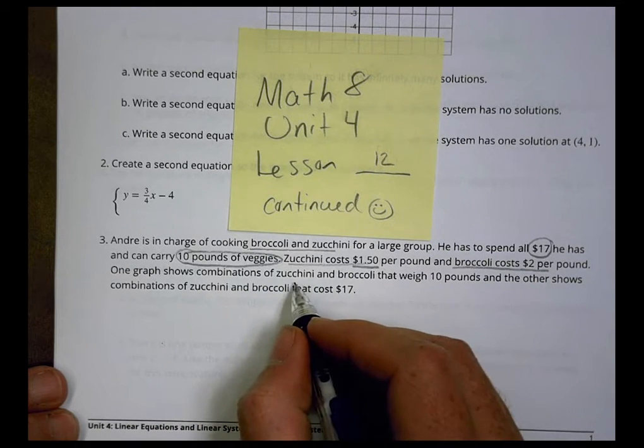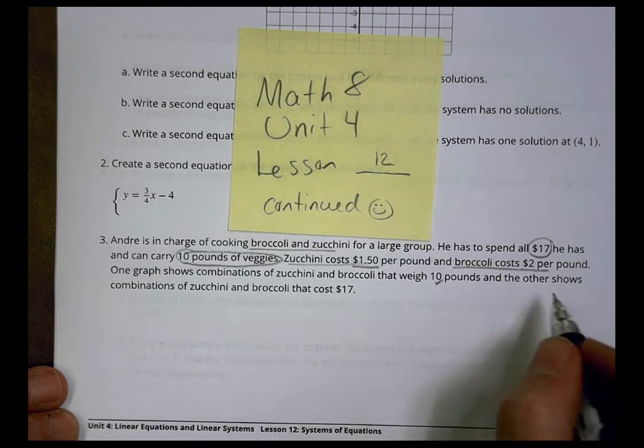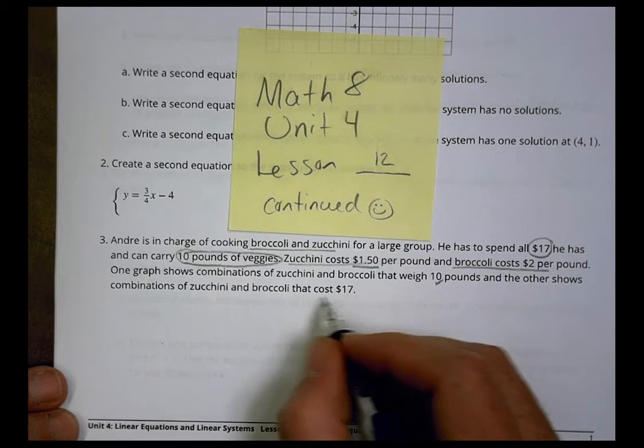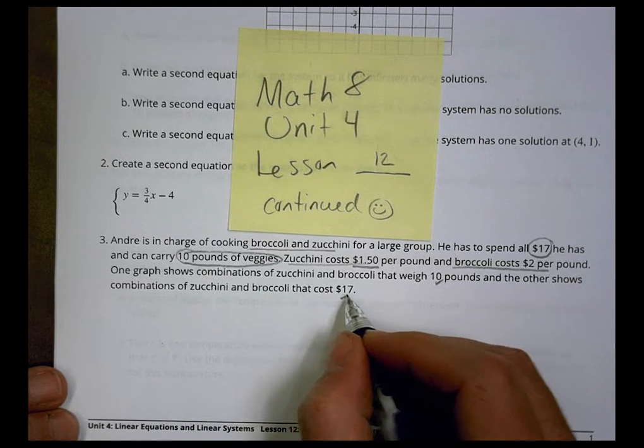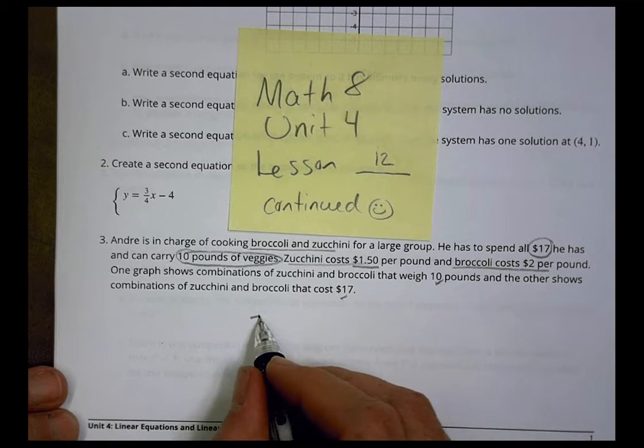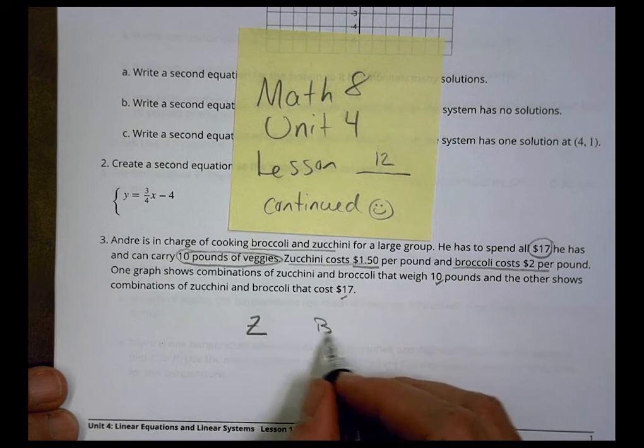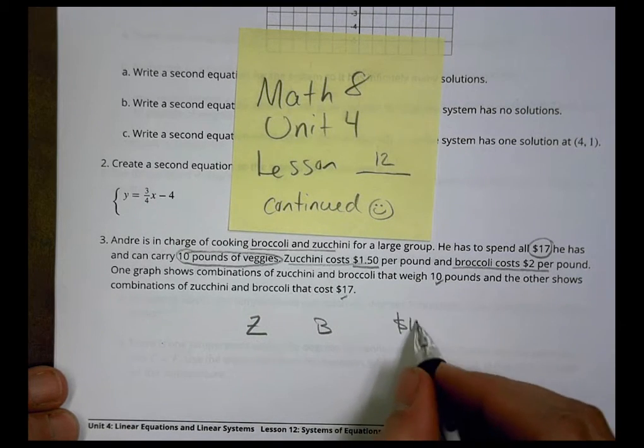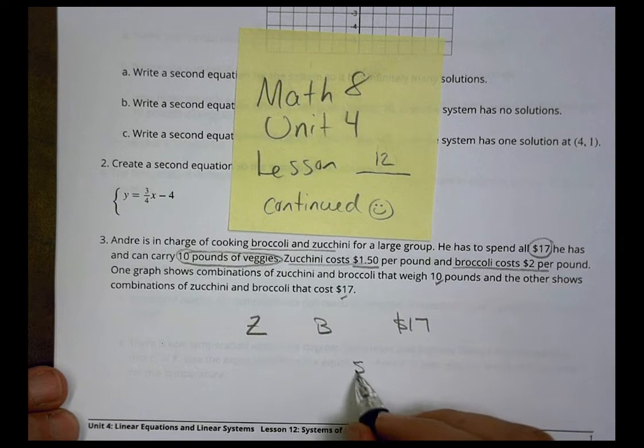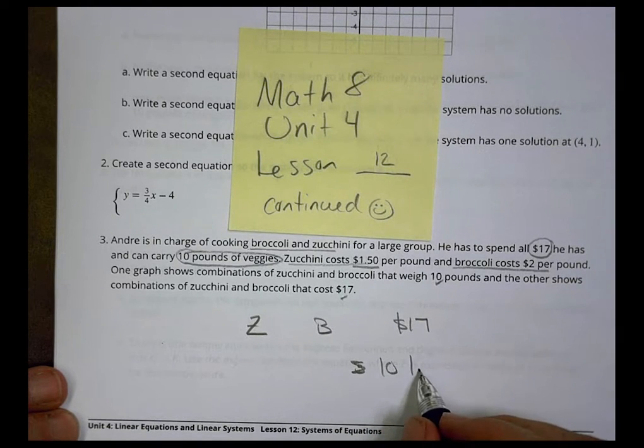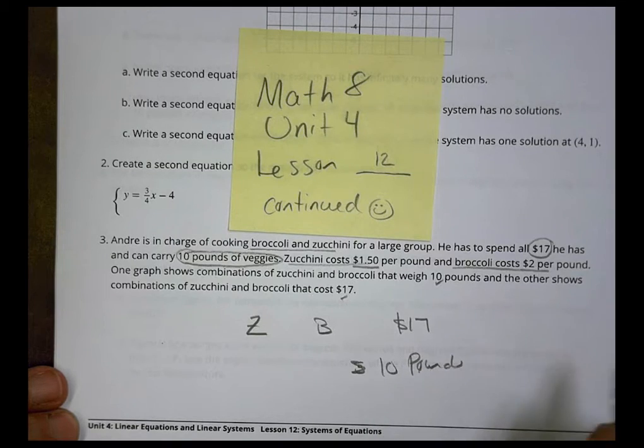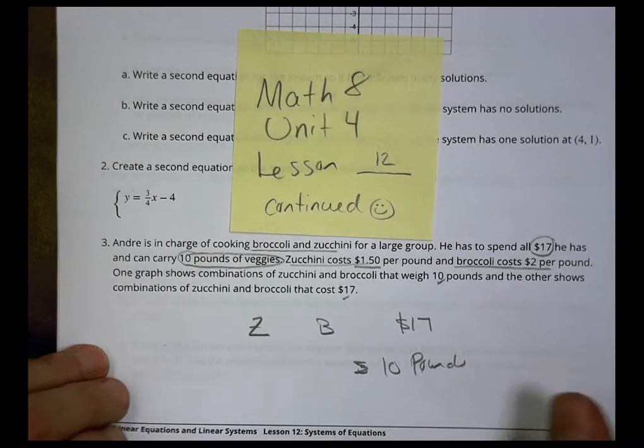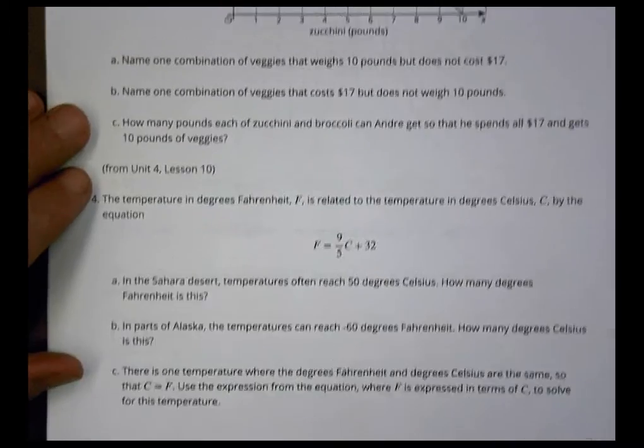One graph shows a combination of zucchini and broccoli that weighs 10 pounds, and the other shows combinations of broccoli and zucchini that cost $17. We know we have to spend $17 and also have a total of 10 pounds. Let's take a look at our graph and see what we have here.